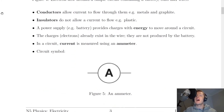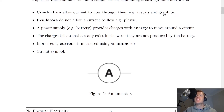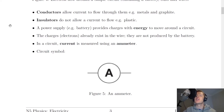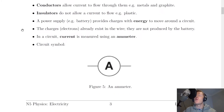In order to have a working circuit we need conducting wires. Conductors allow current to flow through them — for example metals and graphite — but insulators do not allow a current to flow, for example plastic, rubber, or wood. So we need wires that are conductors if we want current to flow.